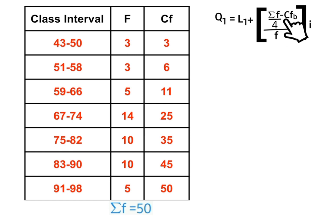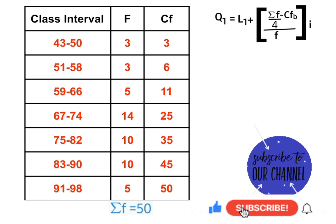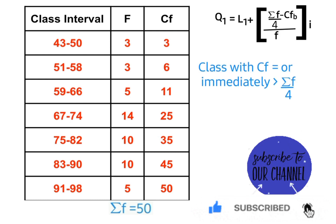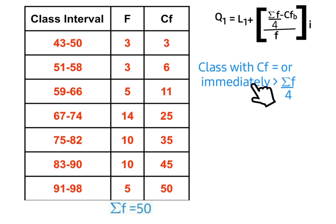...all over the frequency of the first quartile class, times the class width. The first thing to do here is to identify the first quartile class. The first quartile class is that class with cumulative frequency that is equal to or immediately greater than summation f over 4.